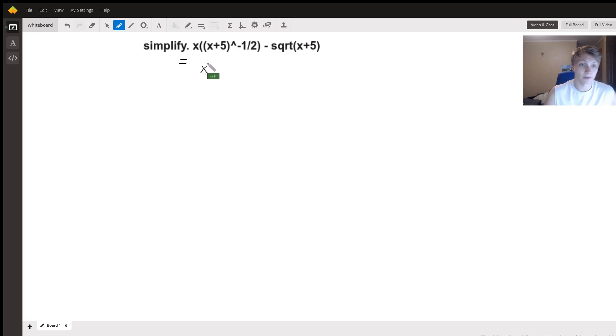So we have x times x plus 5 to the negative one-half minus square root of x plus 5. And just to get used to that exponent form, that's x plus 5 to the one-half, right? Square root of x is equal to x to the one-half.